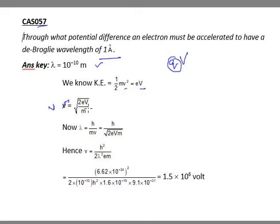Now lambda, the de-Broglie wavelength, is h by mv where v is the velocity. So I will substitute the velocity value in this relation and get h by square root 2eVm.